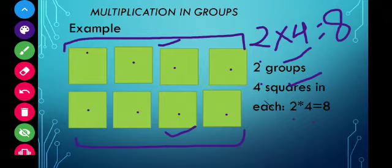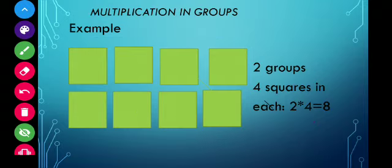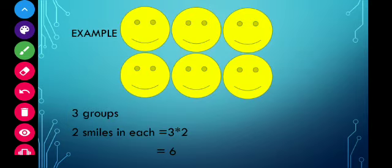That means two multiplied by four equals eight. So this is our counting in groups using the multiplication method. One more thing — you can form groups either horizontally or vertically. Let's do another example.